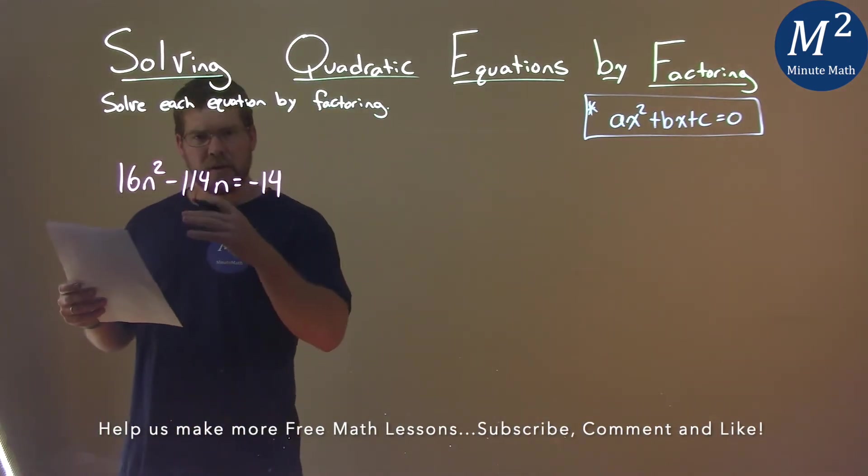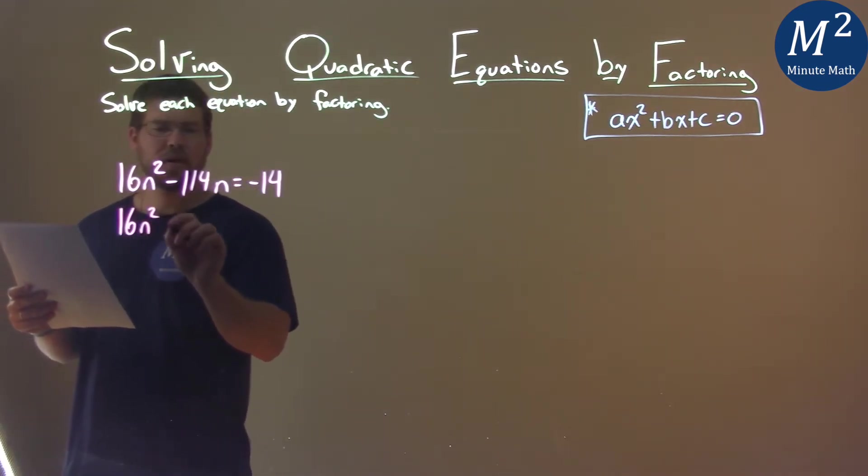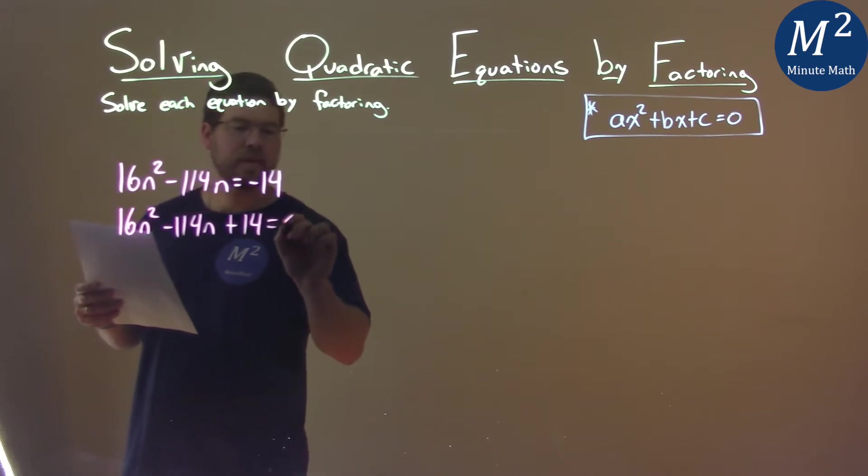I want to get everything together on the left-hand side, so I'm going to add 14 to both sides. This gives me 16n squared minus 114n plus 14 equals 0.